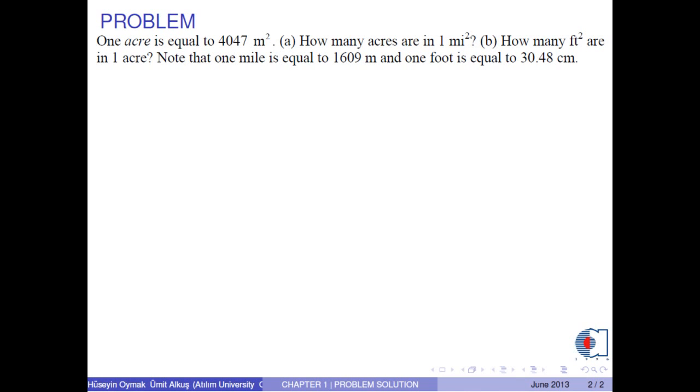One acre is equal to 4047 meters squared. (a) How many acres are in one mile squared? (b) How many feet squared are in one acre? Note that one mile is equal to 1609 meters and one foot is equal to 30.48 centimeters.